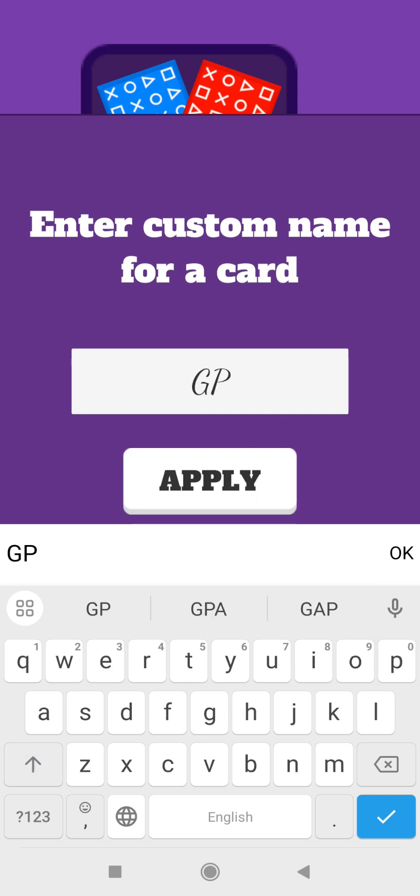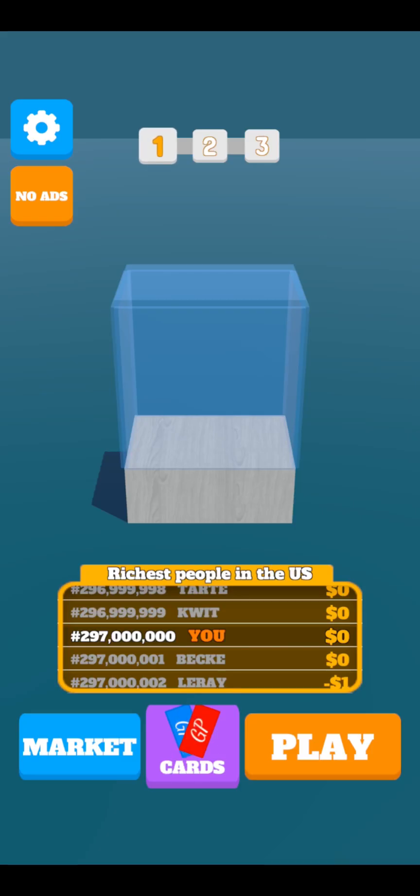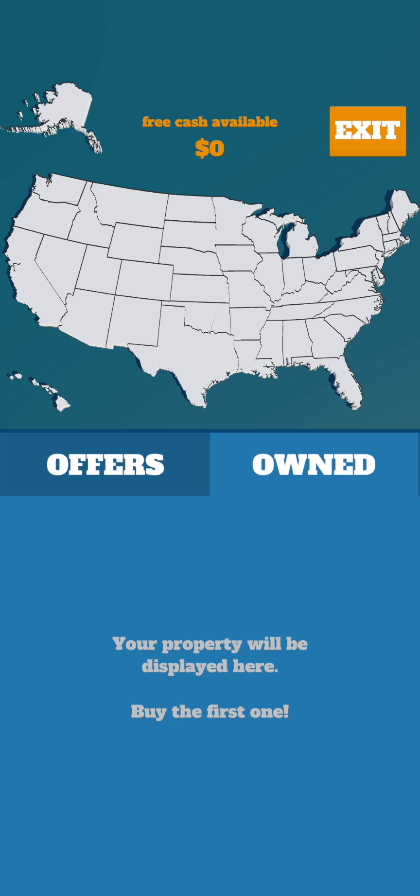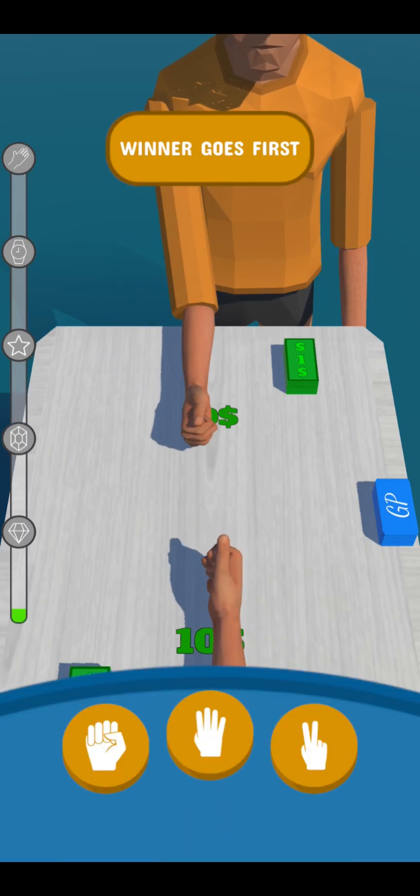And the personalization is that you can name the card. Okay, I put GP there. All right. So let's have a look at that part. We can build apparently some properties there in the market. But let's play.